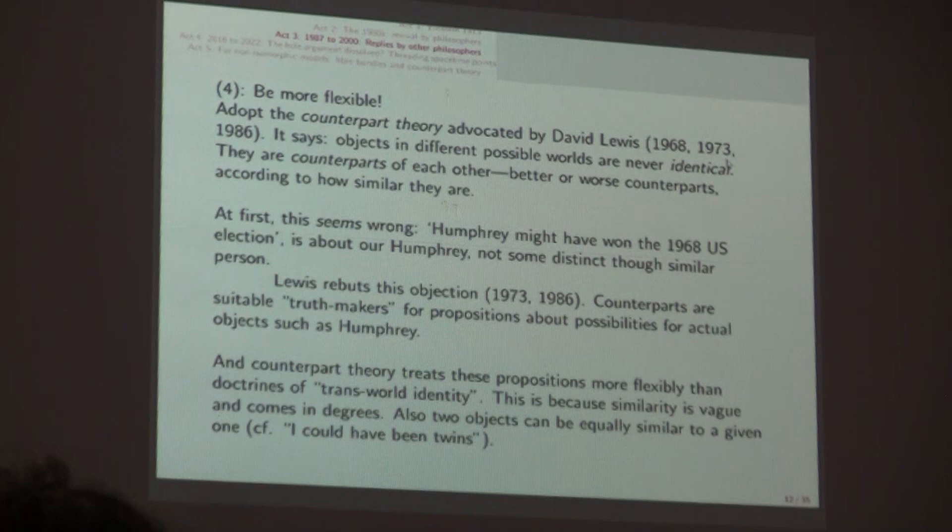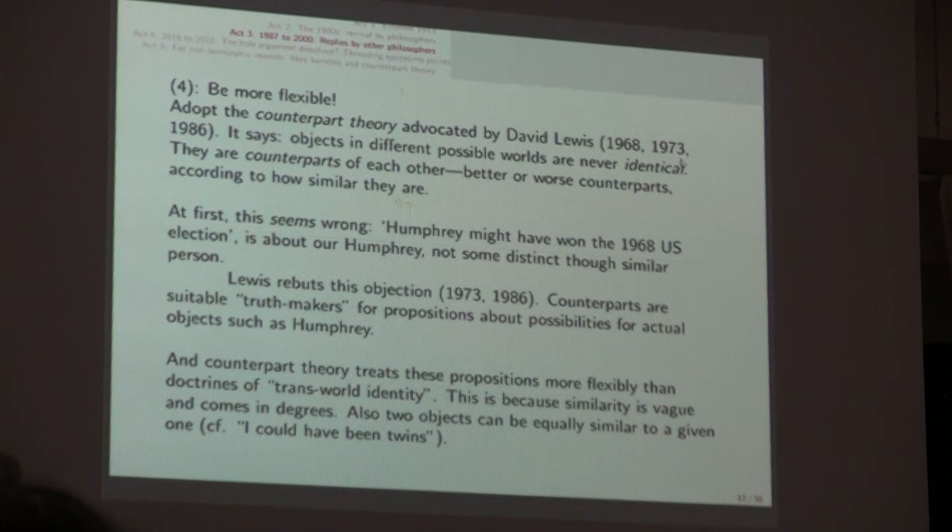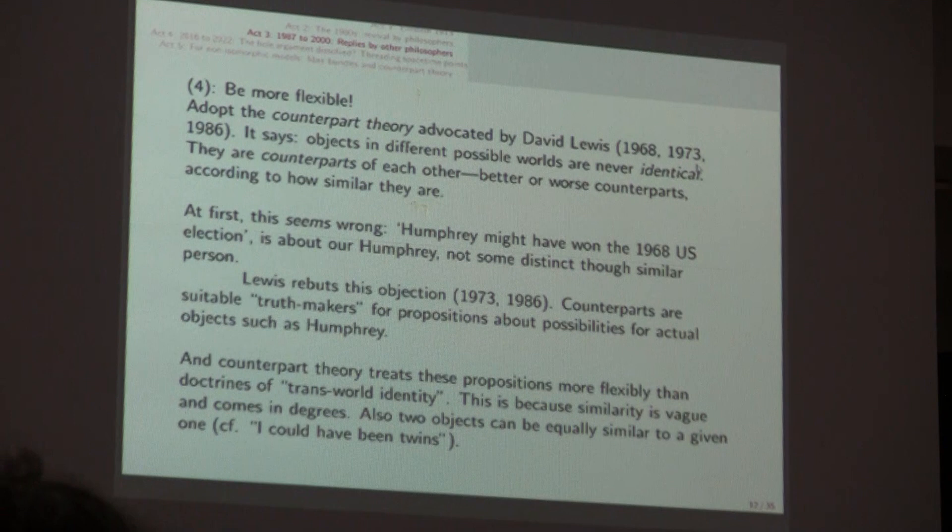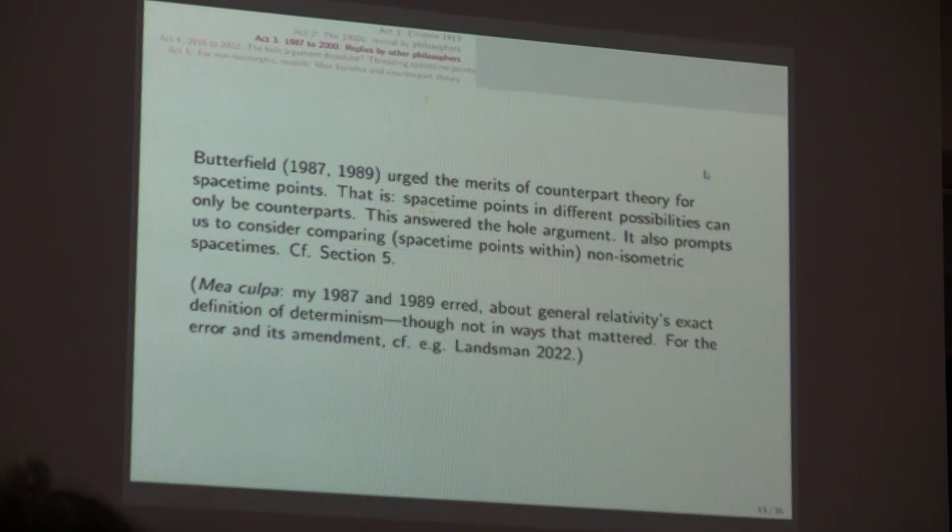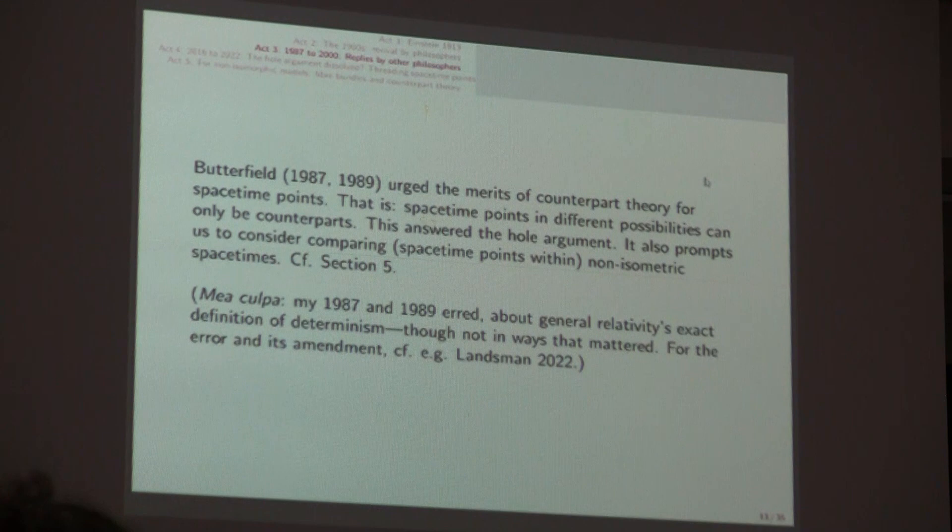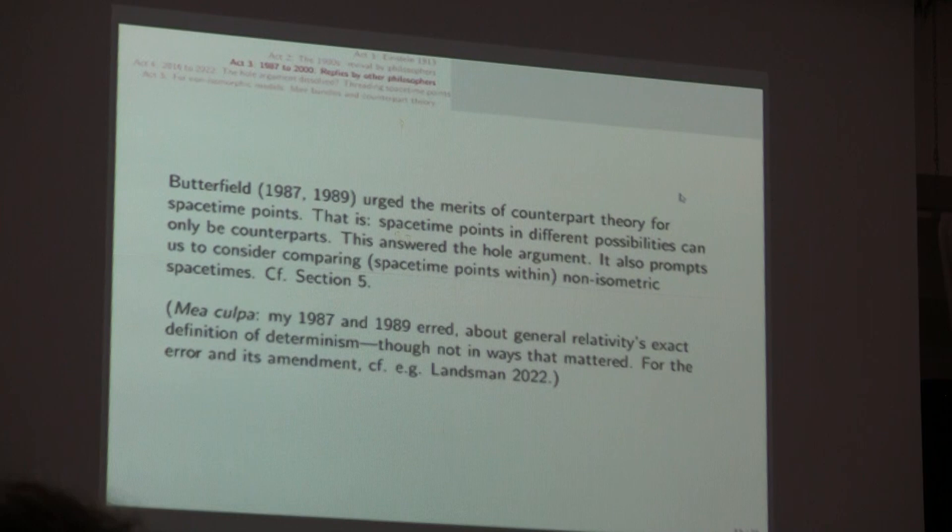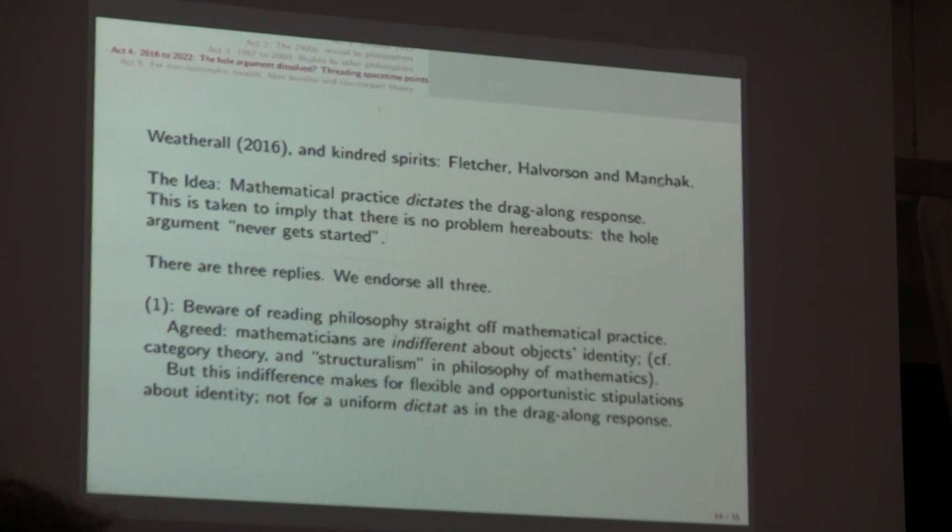If you think hard enough and you read Lewis's reply you realize that his replies are completely convincing. And there's really some it's going to be tough to maintain that objects are actually the very same things in different possible worlds. Lewis argues well against the strong identity view. It's also clear that counterpart theory is going to treat these sorts of propositions about how things could be more flexibly than doctrines of transworld identity. Because similarity is vague and it comes in degrees.